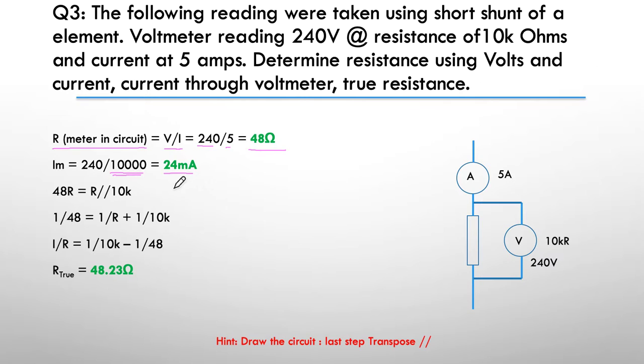I then parallel my 48 ohms equals R in parallel with 10k, so we're trying to find the value of R. I simply go 1 over 48 equals 1 over R minus 1 over 10k. That's our parallel resistance equation and I simply transpose it.